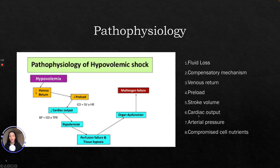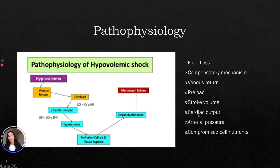There is a reduced mean arterial pressure which follows as the cardiac output gradually decreases. There's a compromise of cell nutrients because as tissue perfusion decreases, the delivery of nutrients and oxygen to the cells also decreases, which would ultimately lead to multiple organ dysfunction syndrome. So you have hypovolemia due to fluid loss which decreases venous return and preload, decreases cardiac output leading to hypotension, then perfusion failure and tissue hypoxia leading to organ dysfunction and multi-organ failure, as seen in this diagram.